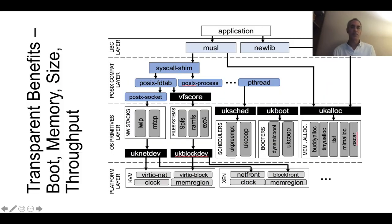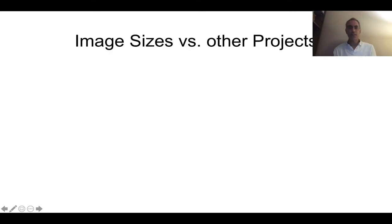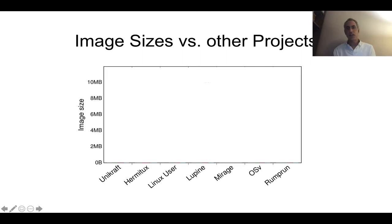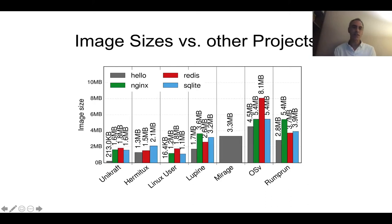The first performance graph is image sizes versus other projects. On the x-axis we have Unicraft first, and then a number of other unikernel projects, but also Linux and Lupine — Lupine being a unikernel based on Linux. On the y-axis we have image size in megabytes for a few different applications: a hello world application, but then also Nginx, Redis, and SQLite. You can see that Unicraft comes in at the bottom, where the very basic hello world image is a couple hundred kilobytes, and the other applications are a few megabytes in size.